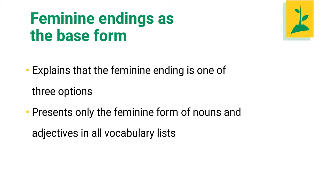Anyone who studies Spanish knows that the base form of all words found in vocabulary lists is masculine — it is the go-to form. As a committee, we questioned why this is. Students ultimately need to know more than one form, so why not start with the feminine? Would that help students who identify as female and are traditionally excluded from the base forms of vocabulary feel more included? We decided that it very likely would. With that in mind, Semillas explains that the feminine ending is one of three possible endings.